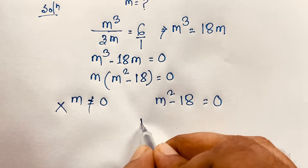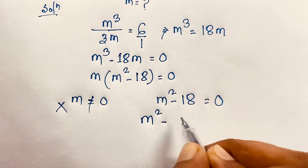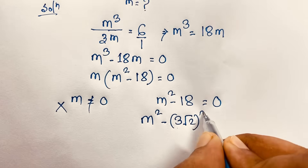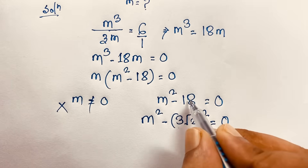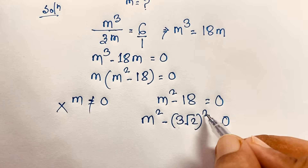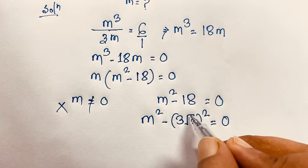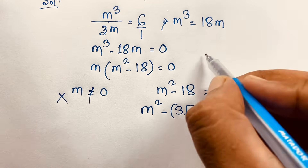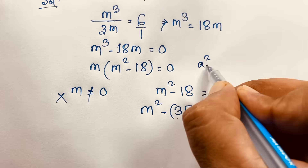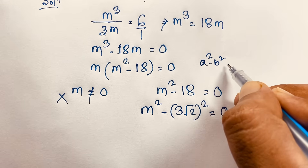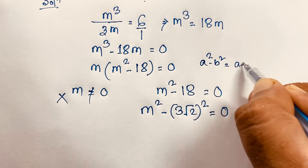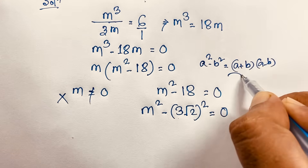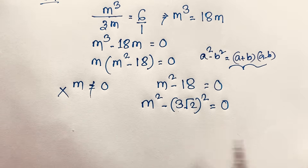You can see here m squared equals 18, which is (3 square root 2) squared, because 3 squared is 9 and 9 times 2 is 18. Now I apply the math formula: a squared minus b squared equals (a plus b)(a minus b). Applying this formula here, with b equal to 3 square root 2.